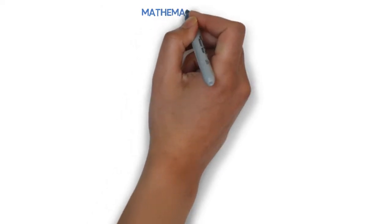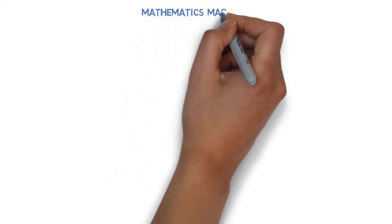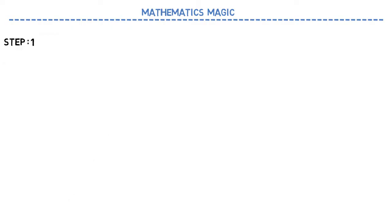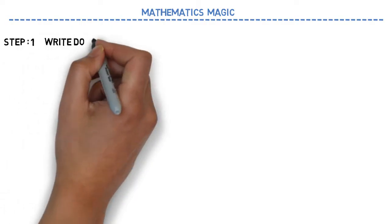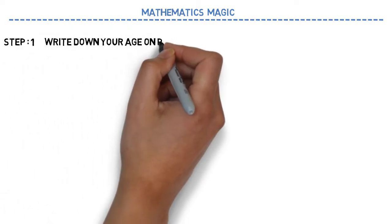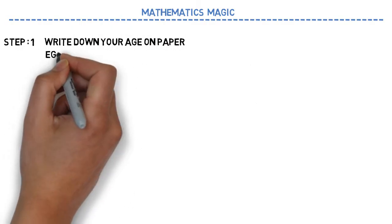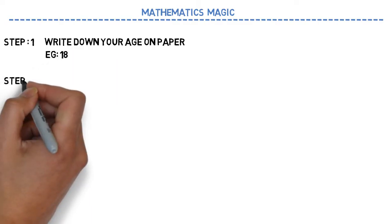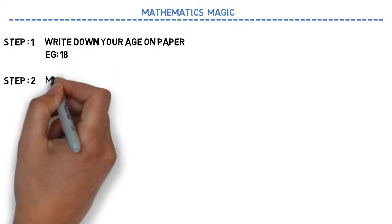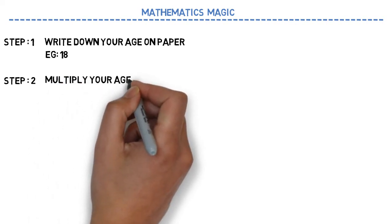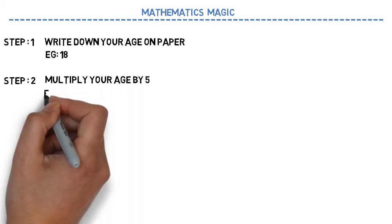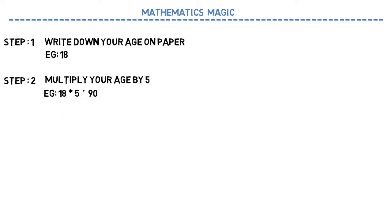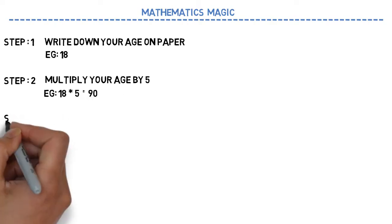Let's begin with the Mathematics Magic. In the first step, write down your age on a paper. For example, let's say your age is 18 — write down just 18. In step 2, multiply your age by 5. So if your age is 18, you need to multiply by 5, and the result equals 90.